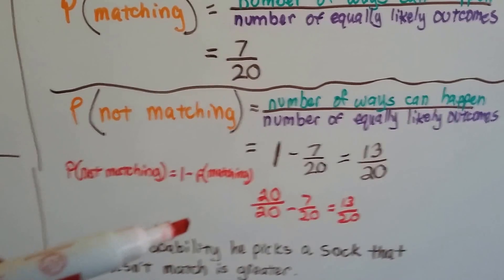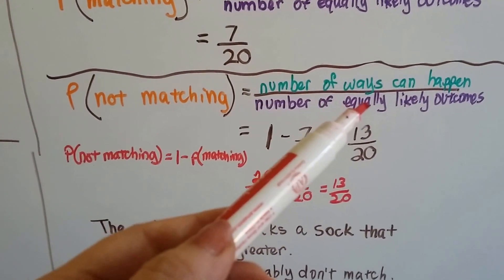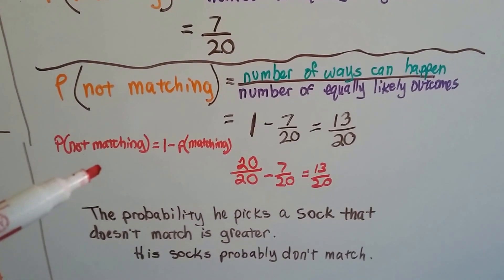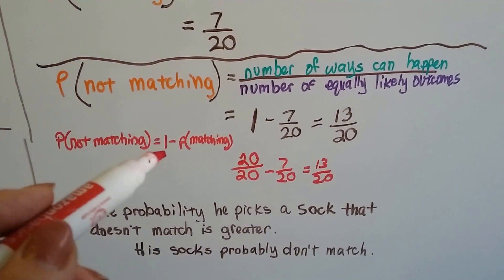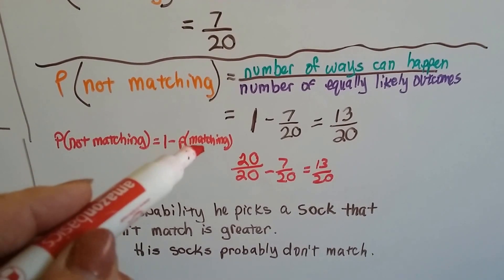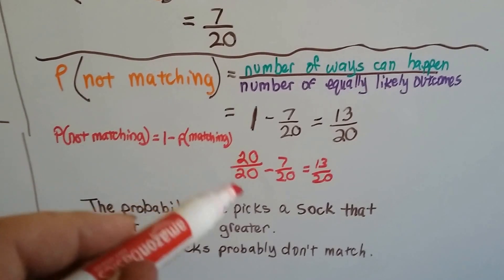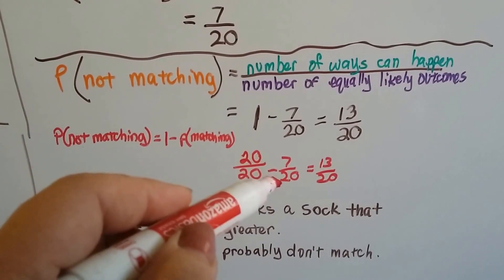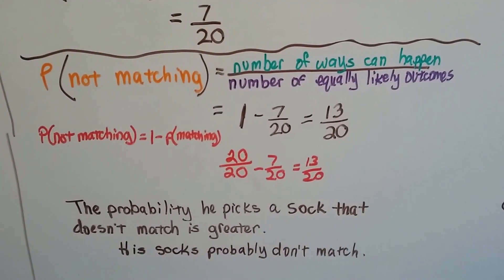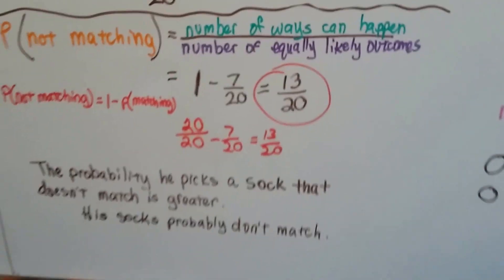For the not matching probability, we find the complement. The probability of not matching is equal to 1 minus the probability of matching. So, 1 is 20 over 20 — same numerator and denominator makes a 1. We subtract 7 over 20 and get 13 over 20. That's what the not matching chances are.